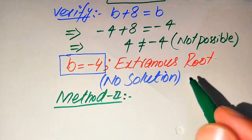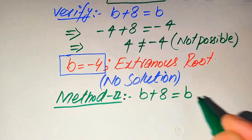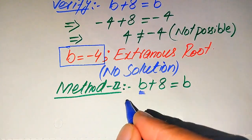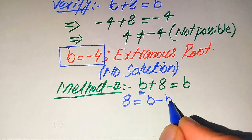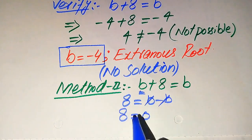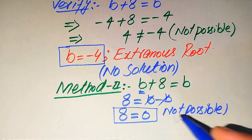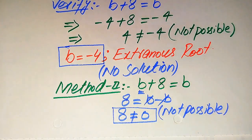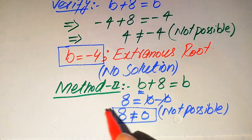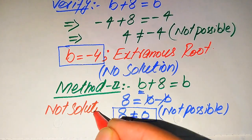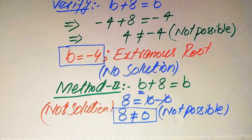Now we move to our second method, which is a straightforward method where we directly determine whether the equation has a solution or not. We copy the given equation: √(B + 8) = B. We move B to the right hand side and it becomes 8 = B − B, giving us 8 = 0. It is not possible that 8 equals 0, which means we cannot get any value of B. So we conclude that the solution set is empty — this equation has no solution. Thank you for watching this video, please subscribe to my channel for more exciting videos.